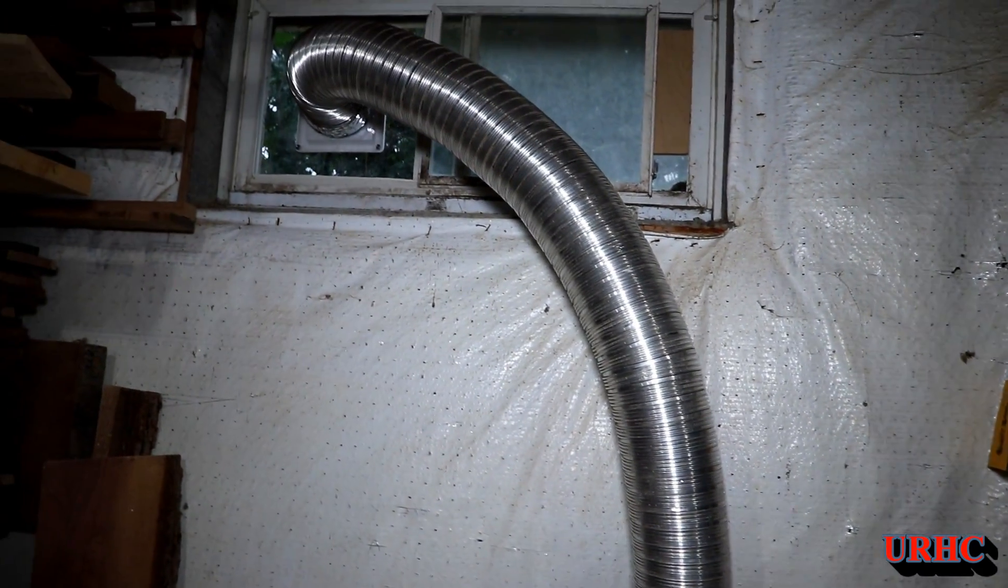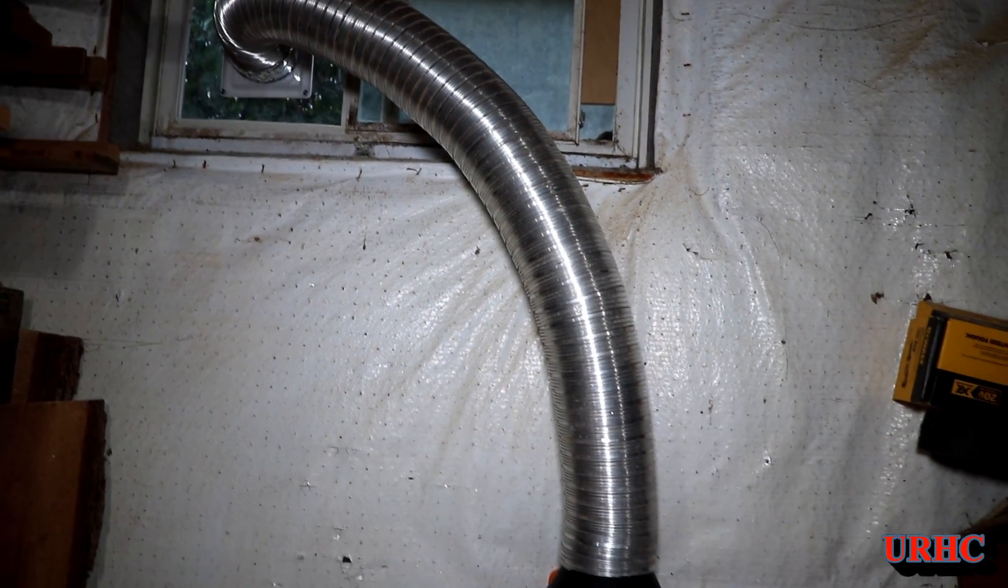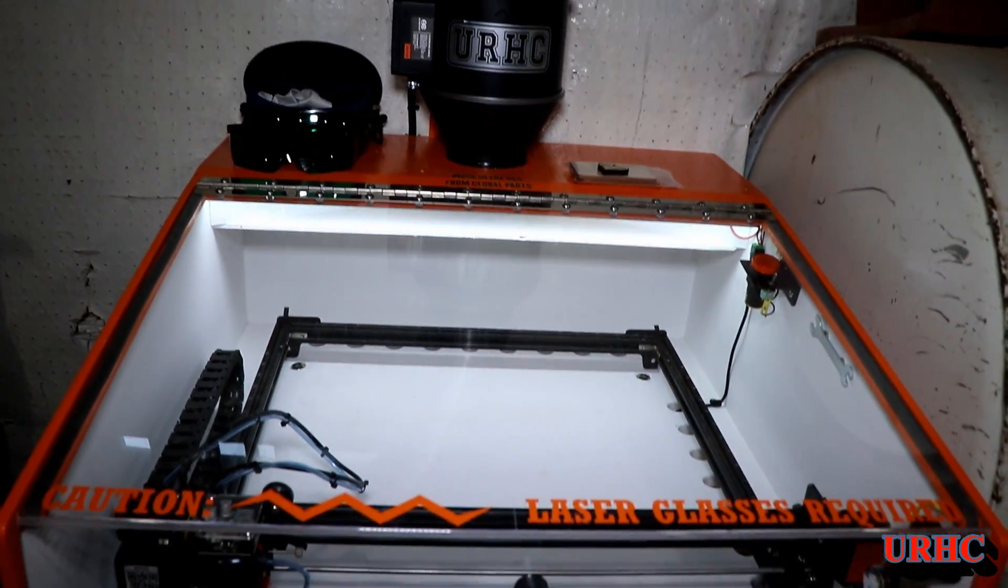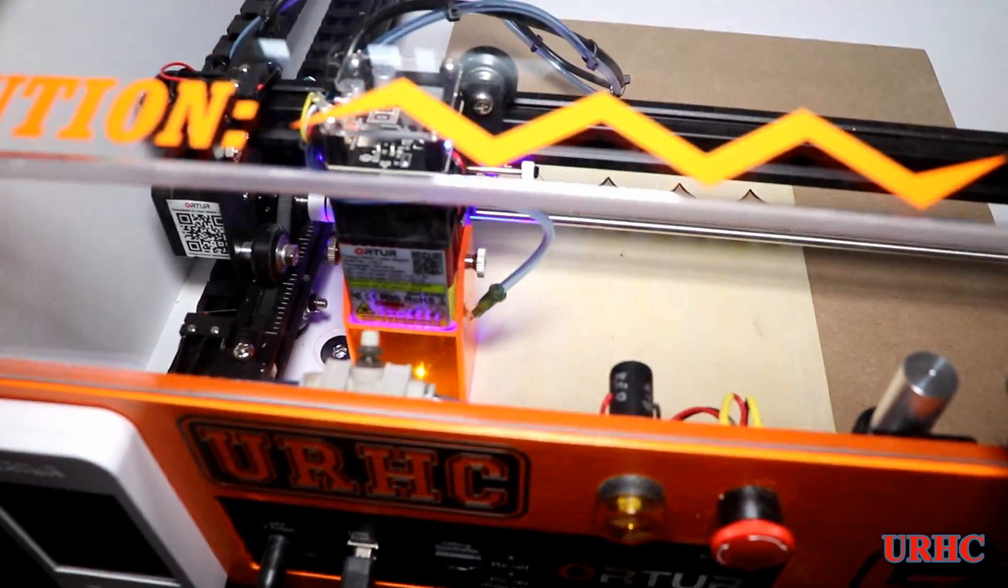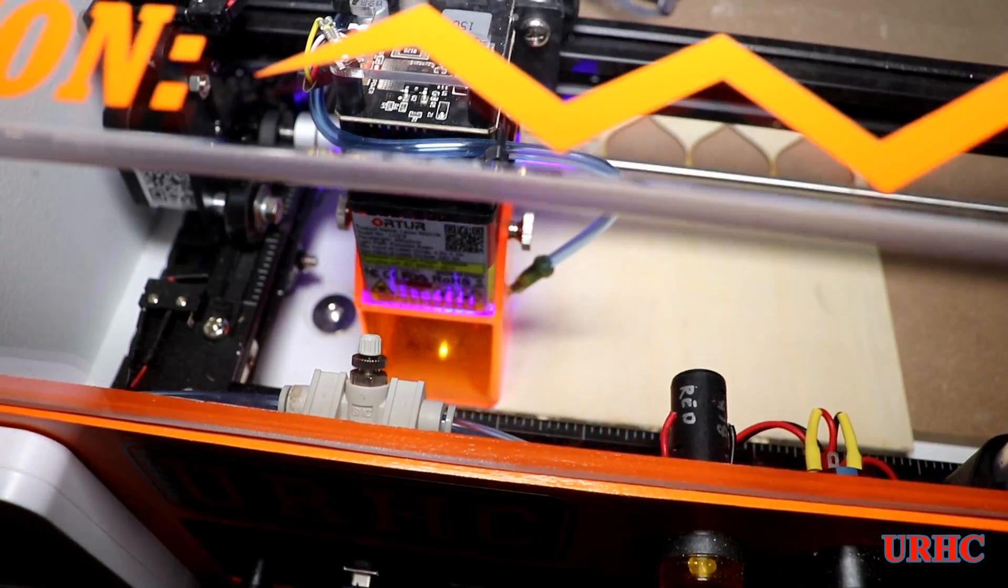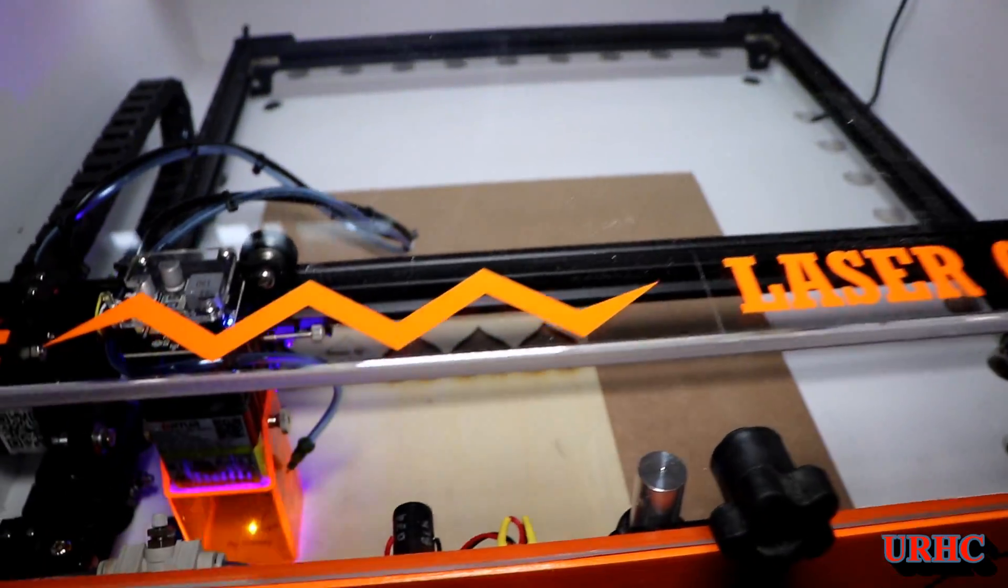I had a piece of steel flex dryer vent laying around that I decided to use. You can see that goes up and out the window there. It was a little bit big to get on the blower, but I just put some foam tape in between it and it slipped right on there nice and tight.